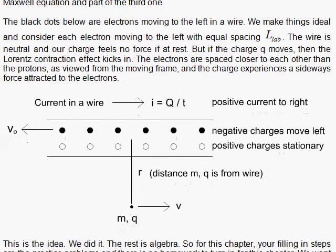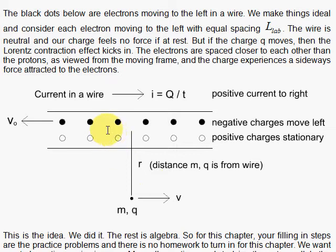We start here with a wire in the laboratory frame and the wire has current moving to the right, positive current, which means the electrons move to the left. The spacing between the positive charges is given by L-sub-lab and the spacing between the electrons in the lab frame is L-sub-lab.